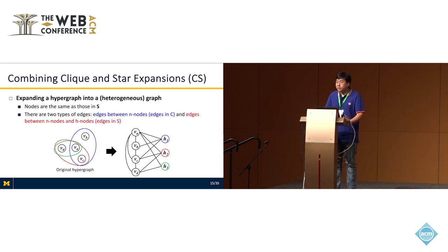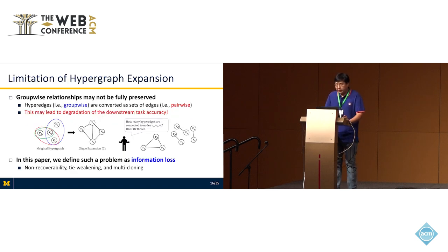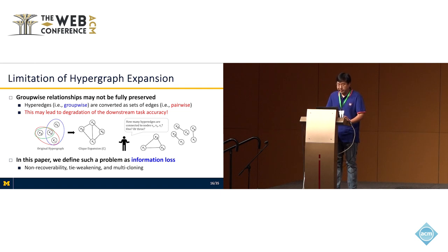There is also a possible expansion method that combines clique and star expansions. However, these expansion methods have a limitation because group-wise relationships may not be fully preserved. Since hyperedges are converted as a set of edges, this may lead to degradation of downstream task accuracy. In this paper, we define such a problem as information loss.